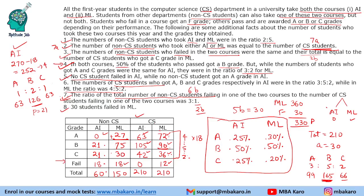So there was a lot of data given here, making it quite a complicated set because one needed to understand that in non-CS students these numbers are different, while for CS students AI total will equal ML total. We had to bifurcate into three grades A, B, C and also the failed students — a quite data-intensive set — and this is how we fill the table.